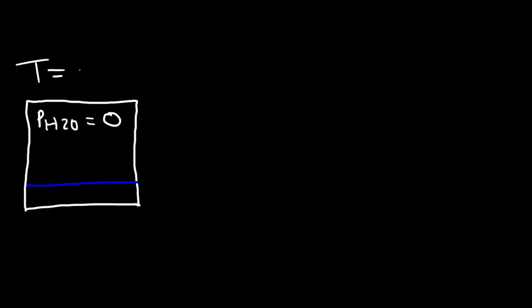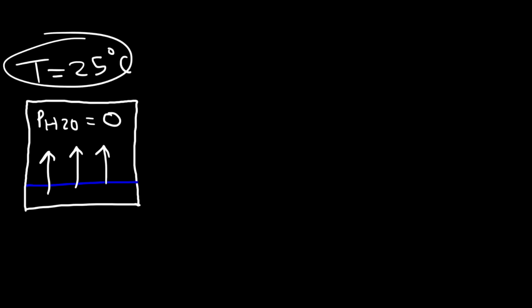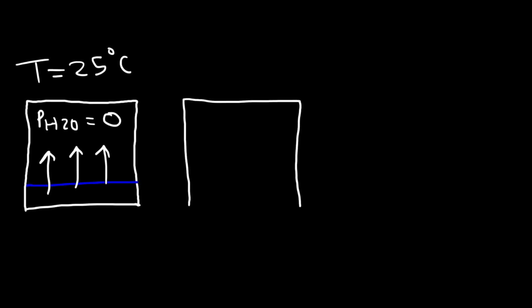Let's say the temperature is 25 degrees Celsius. Some of the water molecules will evaporate into the vapor phase. The rate of evaporation is dependent on temperature — if you increase the temperature, the rate of evaporation increases — so evaporation will be constant at 25 degrees Celsius. After some time has passed, maybe a minute or two, we're going to have some water molecules in the air. Let's say the partial pressure of water is now 15 Torr.